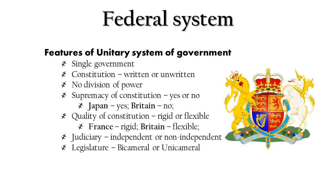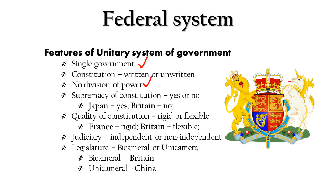The legislature may be bicameral or unicameral — that is, two houses or one house. An example of a bicameral legislature in a unitary government is Britain; a unicameral system is followed in China. In the unitary type of government, except for the single government and the concentration of power, all other features — constitution type, its supremacy, rigidity, judiciary, and legislature — vary from country to country.